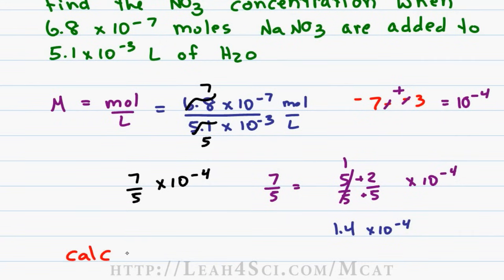Punching the initial numbers into the calculator, I got 1.33 times 10 to the minus 4, which on the MCAT is close enough.